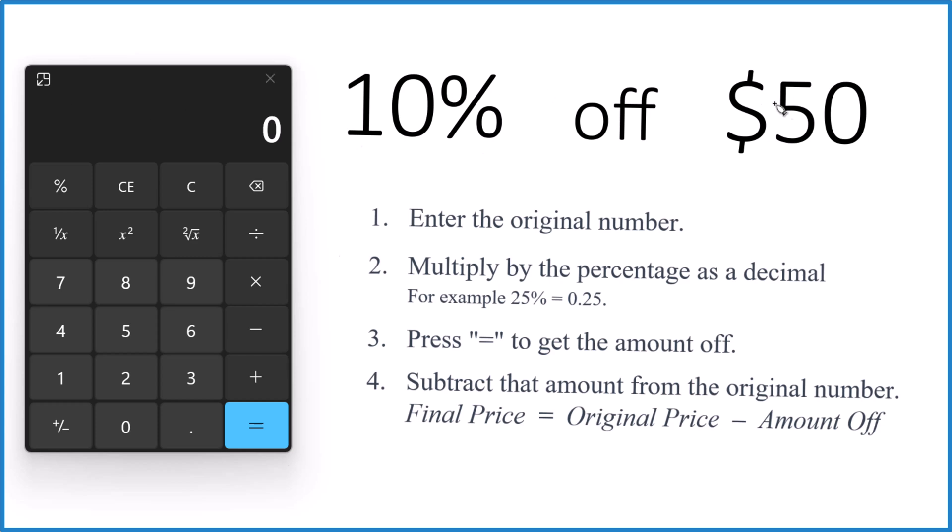So to find 10% off 50 bucks, you enter the original number. So that's the $50. We'll just do it on the calculator here, 50.